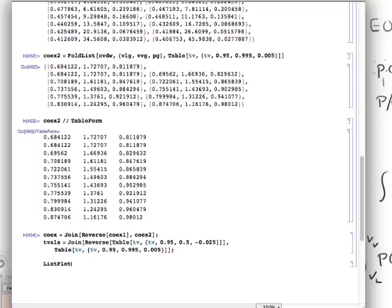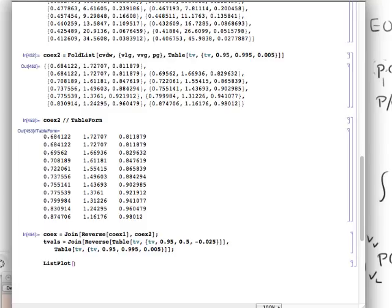And then I can list plot for example, the liquid branch of the coexistence curve would be a list plot of a list of pairs which I can get by taking the coexistence values, the first ones, and then put that together with the temperature values,